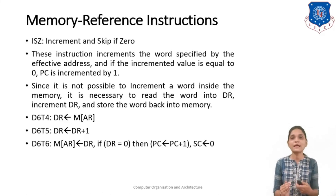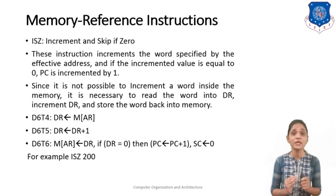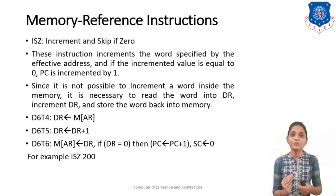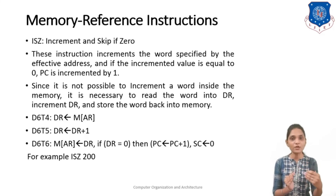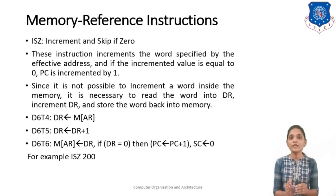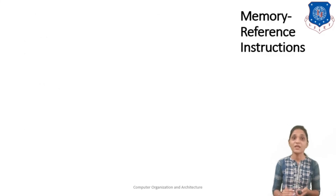For example, consider the instruction ISZ 200 where location 200 contains minus 4. First, minus 4 is brought into DR, then incremented by 1 to give minus 3, then stored back into memory location 200. So the content of that memory location is now minus 3. Since this is not 0, the Program Counter is not incremented and the next instruction is executed normally. By this way you can use the ISZ (Increment and Skip if Zero) instruction.